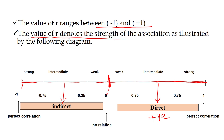If the value on the positive side is exactly 1, then it is called perfect positive correlation. And if it is exactly minus 1, then it is called perfect negative correlation.